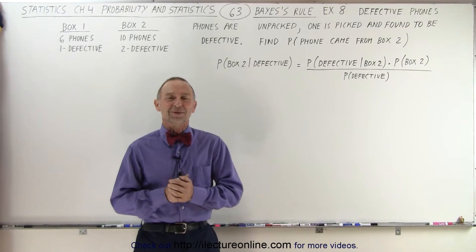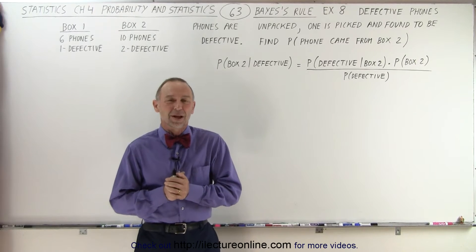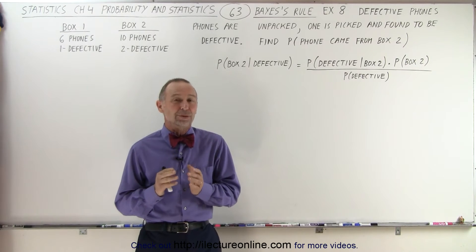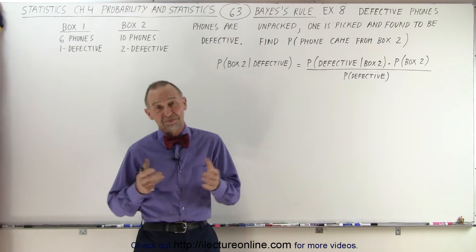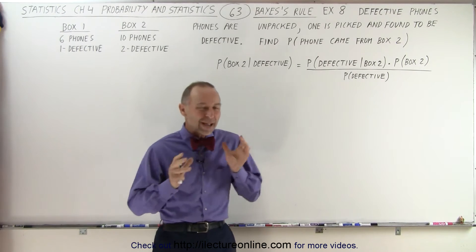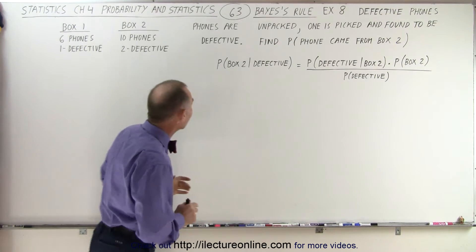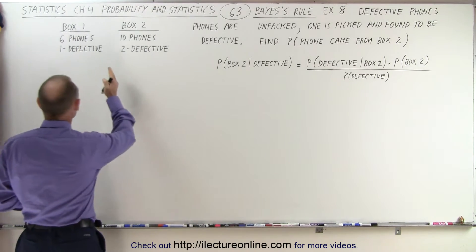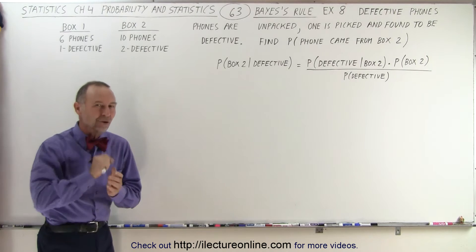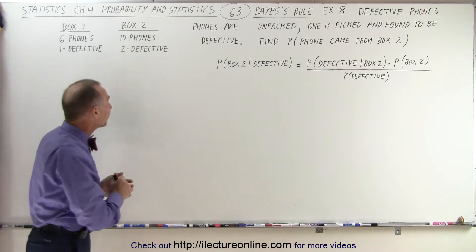Welcome to What Lecture Online. Our next example on Bayes' rule deals with defective phones. Let's say we have two boxes. One box contains six phones, and one of those is defective.